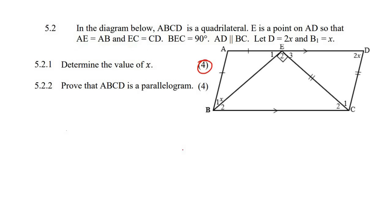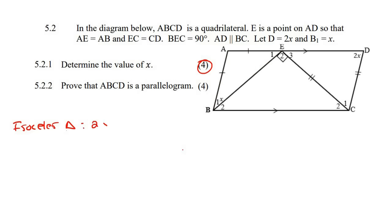The first question for 4 marks says: what is the value of X? Now, you cannot say that this angle and this angle is the same because this is not a parallelogram — they said it's a quadrilateral. So what we could do is: you see here we've got an isosceles triangle. An isosceles triangle is one where two sides are the same.